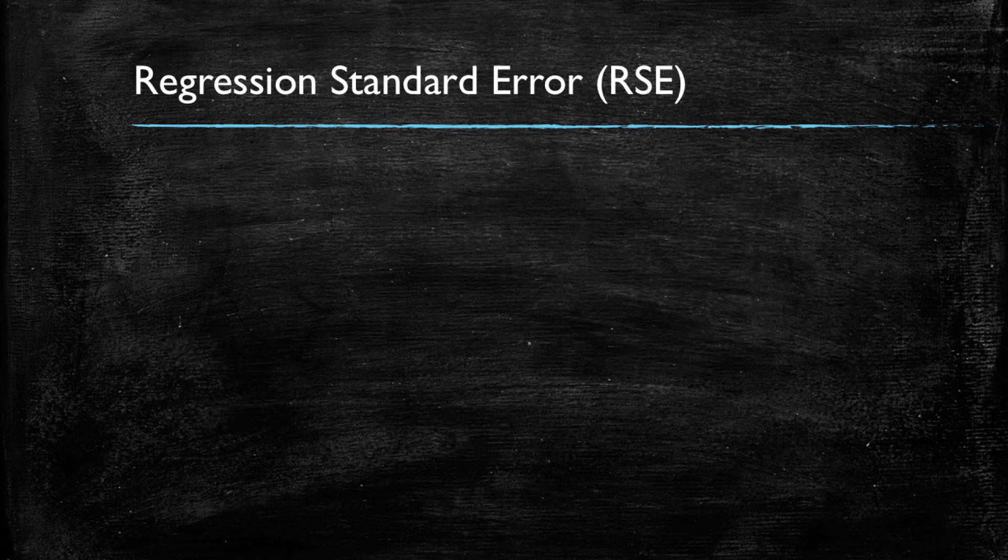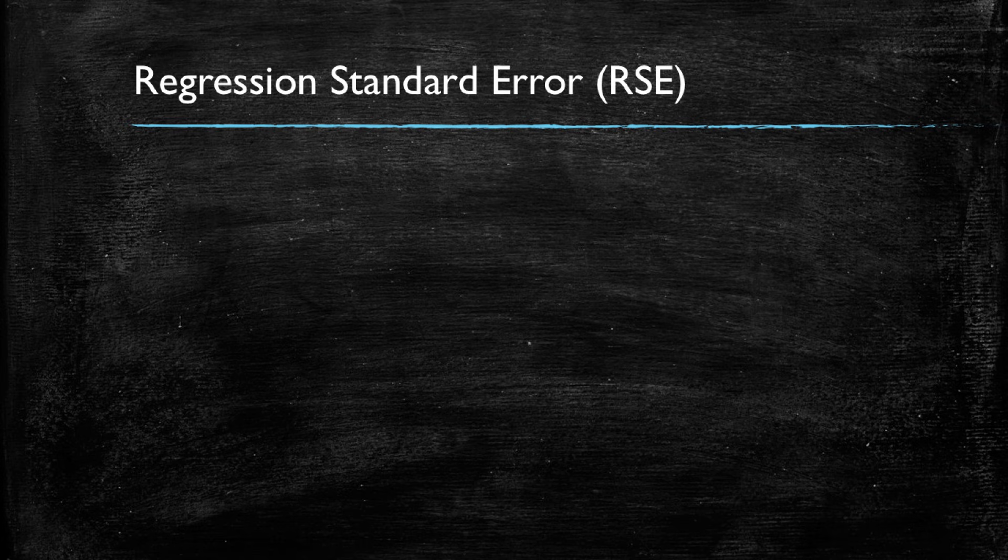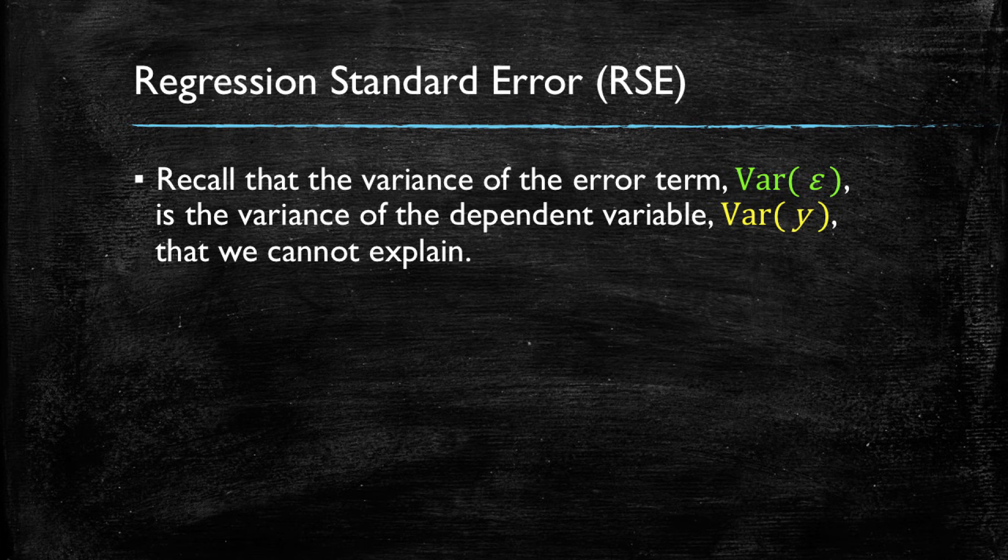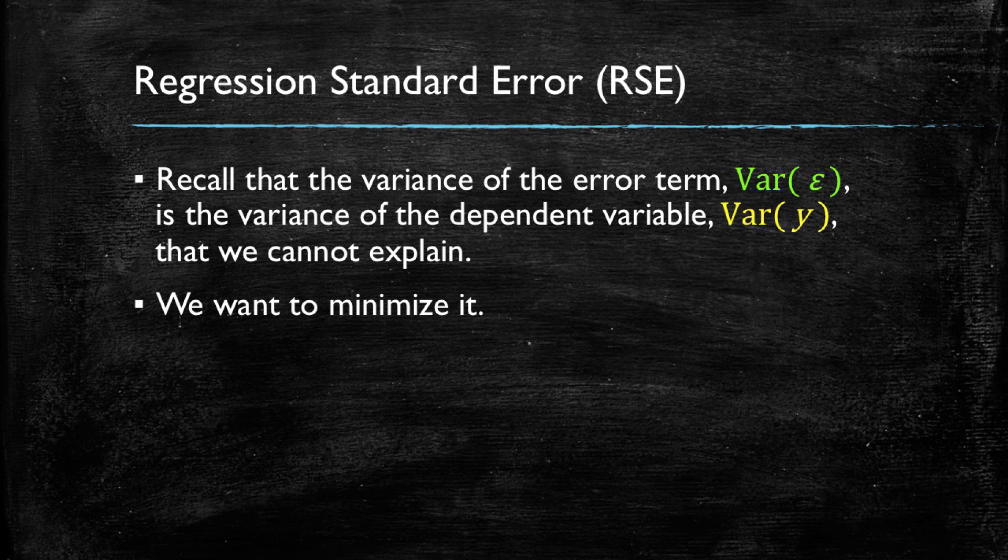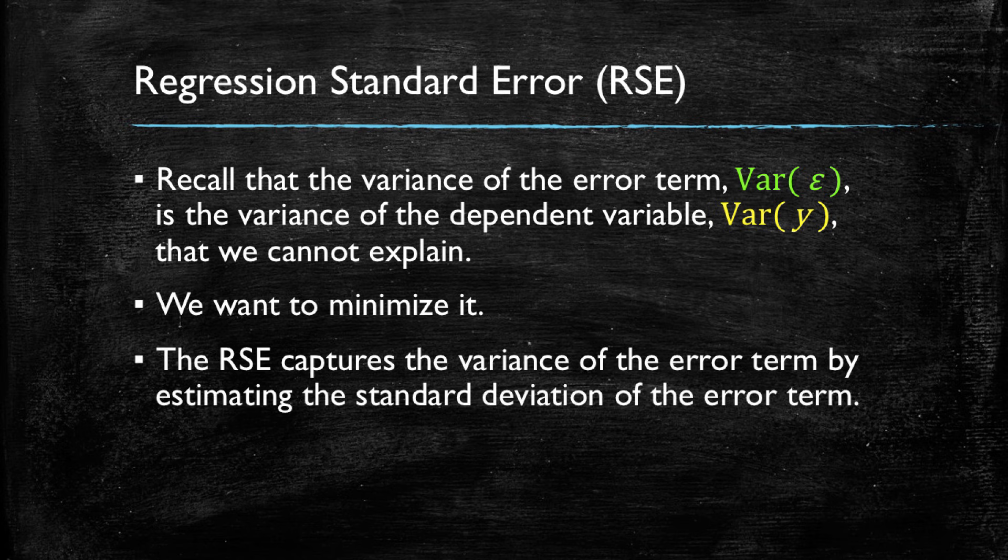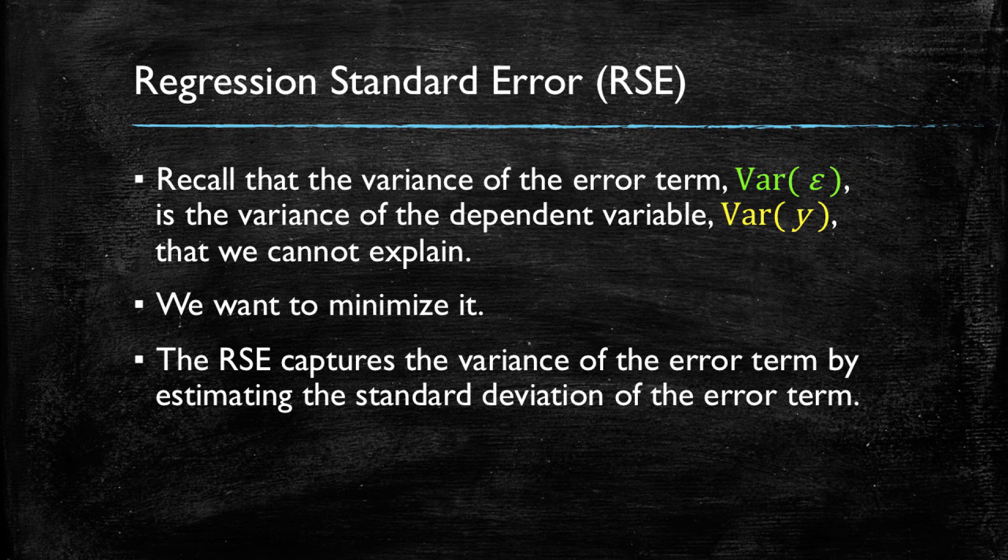The second metric to evaluate the model's fit is called the regression standard error. The regression standard error is related to the variance of the error term. Recall, this is the variance we cannot explain of the dependent variable by using our model. So overall, we want to minimize this because we want to leave the least possible unexplained. What the regression standard error is going to capture is the variance in this error term, the unexplained variance of the dependent variable, by estimating the standard deviation of the error term.